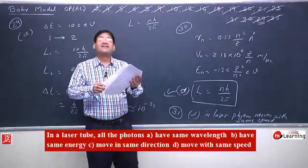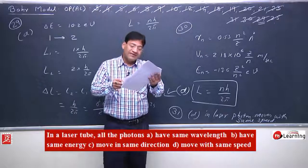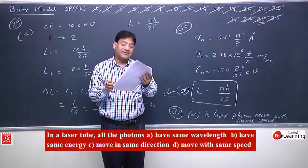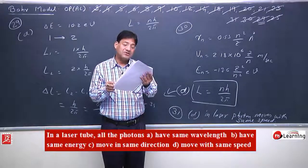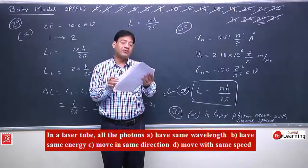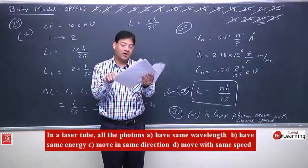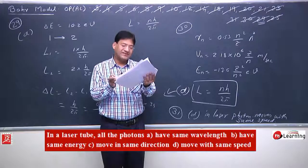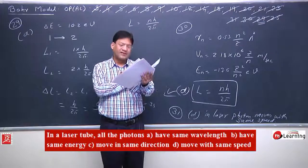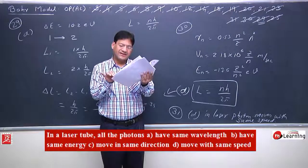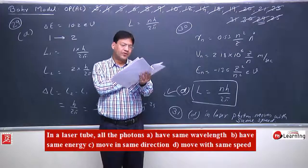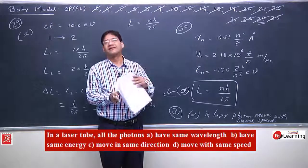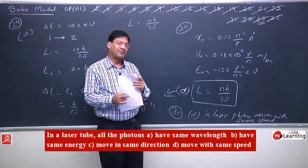Hence, the correct answer to this objective is D: all the photons move with the same speed in a laser tube. This objective problem was advanced level. This section is finished. Now after this we will do multiple choice with more than one correct option.